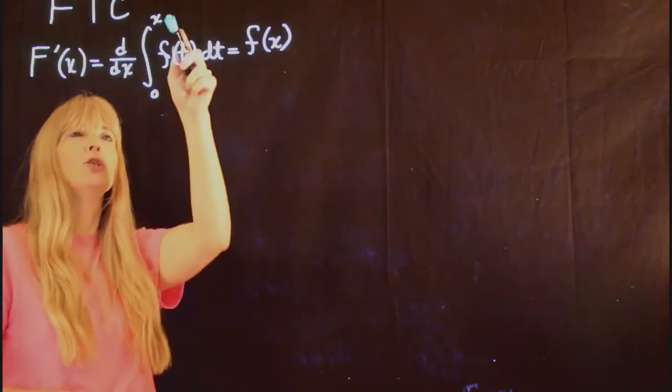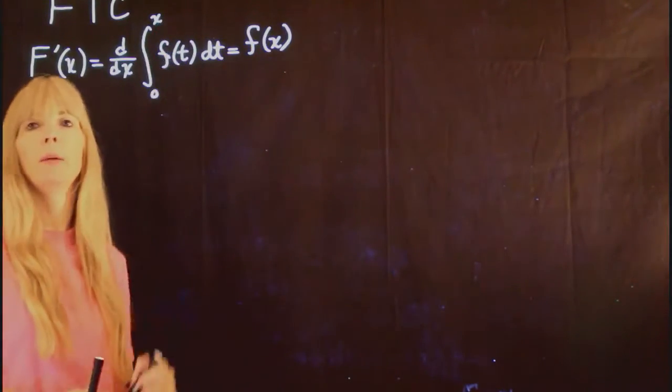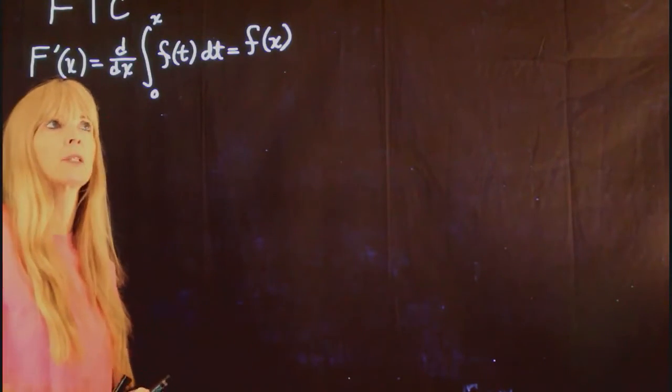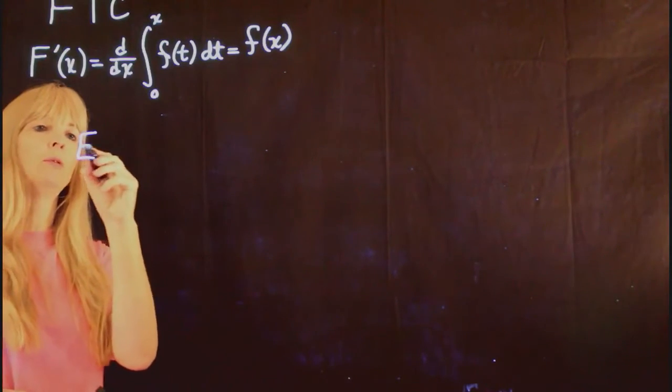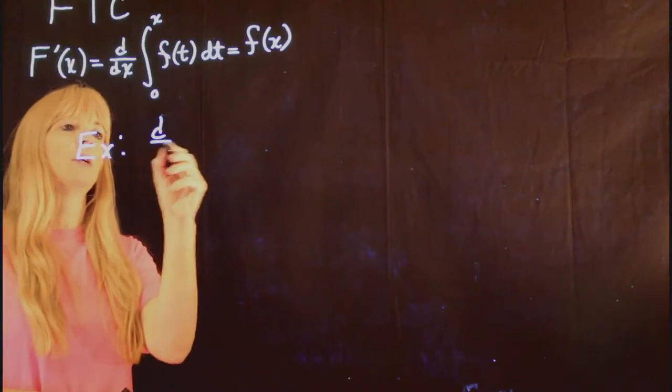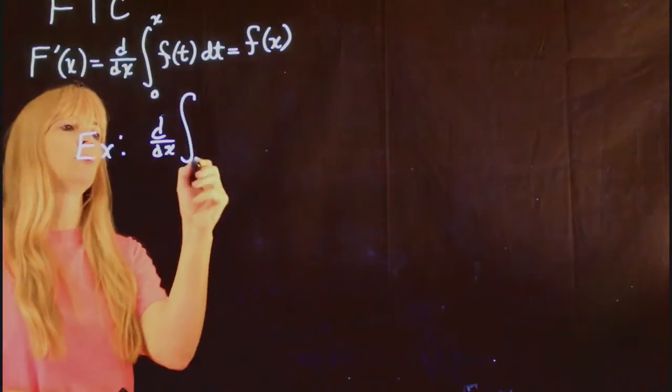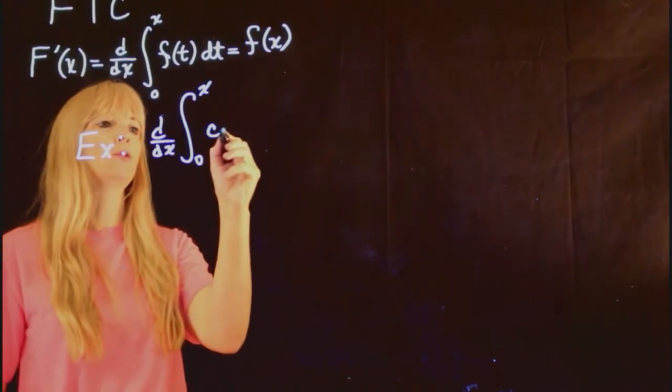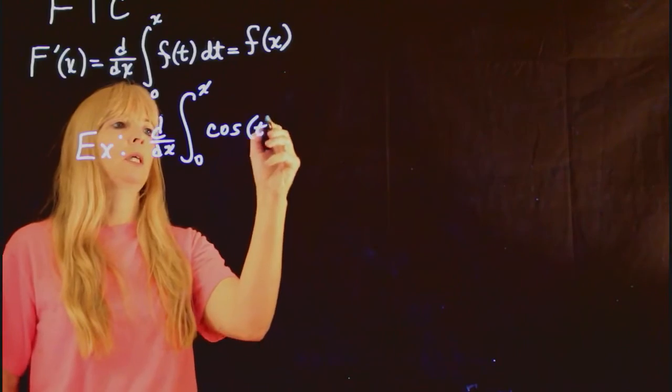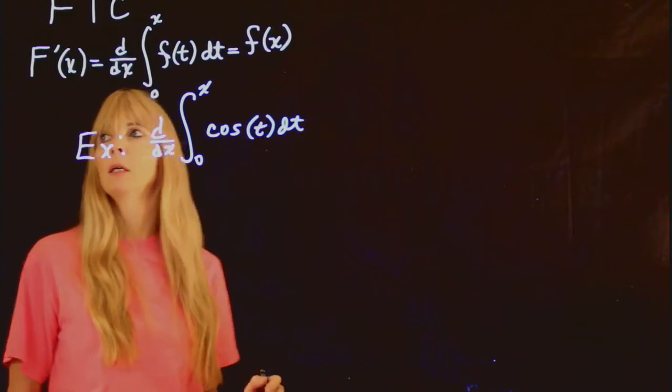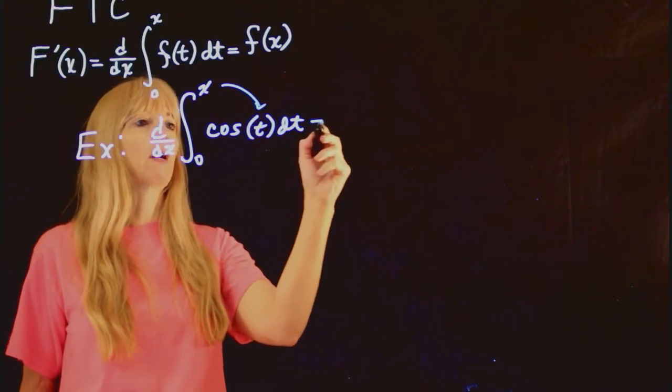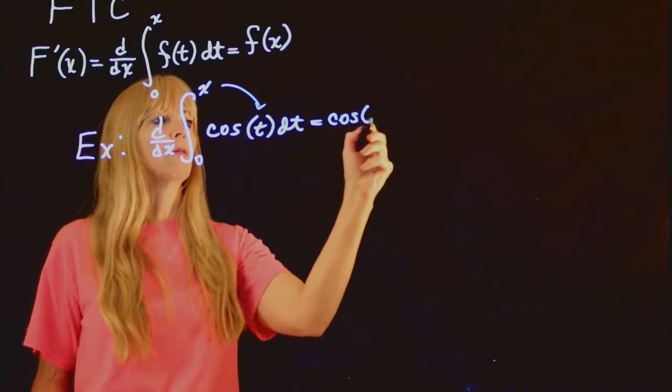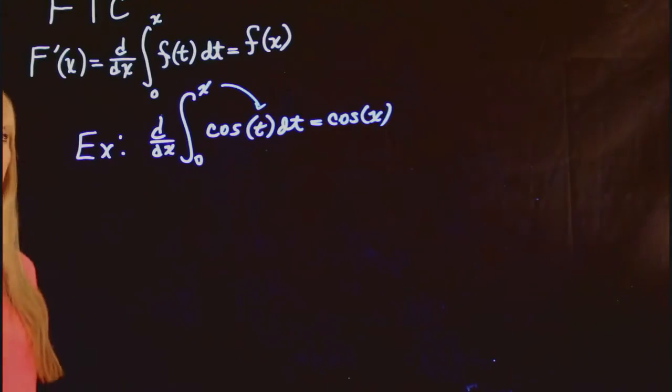So this is pretty easy to do if the top limit, your upper limit, is just x. So if I had something, let's say for example, from 0 to x of cosine t dt, then this is just straightforward. All you do is simply plug this value in and you get your function back. So pretty easy, right?